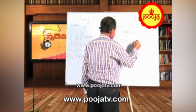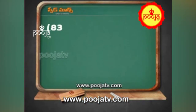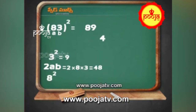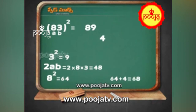Take a bigger number — suppose 83 square. 3 square equals 9 — write 9 here. 2AB equals 2 into 8 into 3 equals 48 — write 8 here, 4 outside. 8 square equals 64. 64 plus 4 equals 68 — write 68 here. So 83 squared equals 6889.